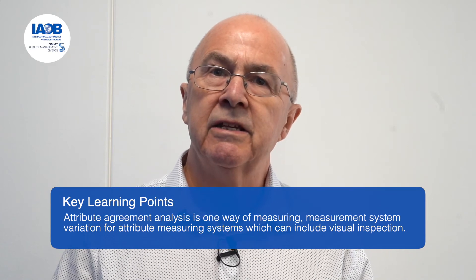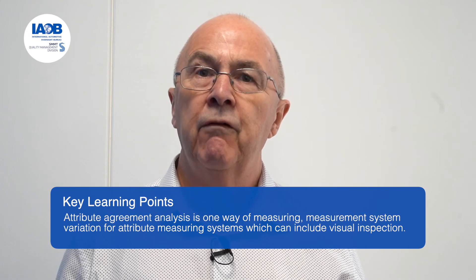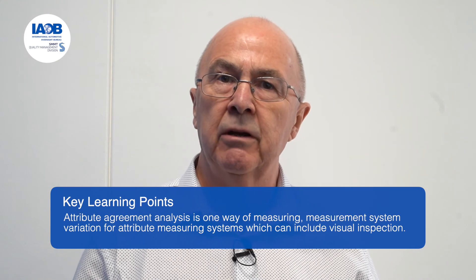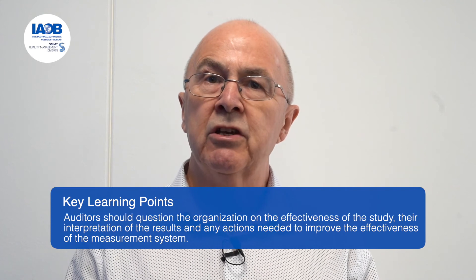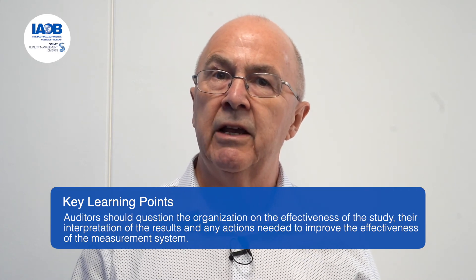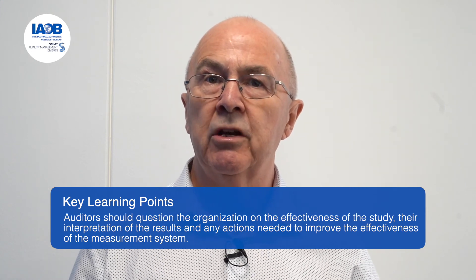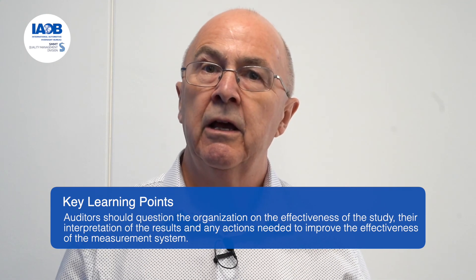Let's summarise. Attribute agreement analysis is one way of measuring measurement system variation for attribute measuring systems, which can include visual inspection. Rather than just looking at summary results, auditors should have the competency to question the organisation on the effectiveness of the study, their interpretation of the results, and any improvement actions needed to improve the effectiveness of the measurement system.